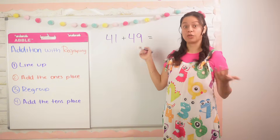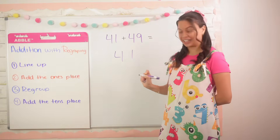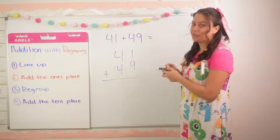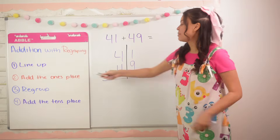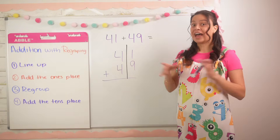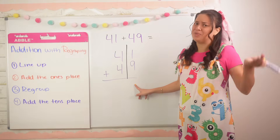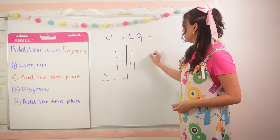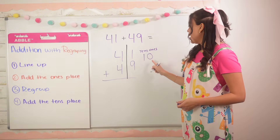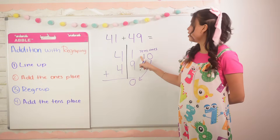Now example two: 41 plus 49. We're finding the total. Step one: line up our numbers using their place value, rewriting vertically — 41 plus 49 — and drawing a line straight down the middle to separate the ones and tens place. Step two: add in the ones place. We have 1 plus 9 which equals 10. Can I write 10 in the ones place? No. So I write it to the side, labeling the ones and tens place. I bring the zero down to the ones place and the ten goes up to the tens place.